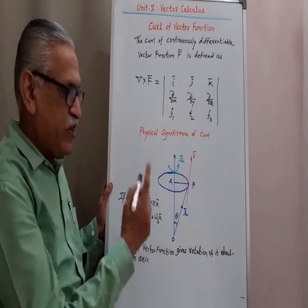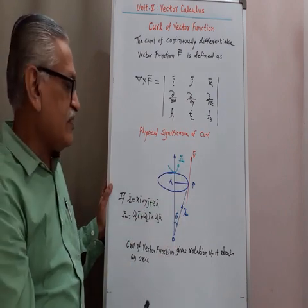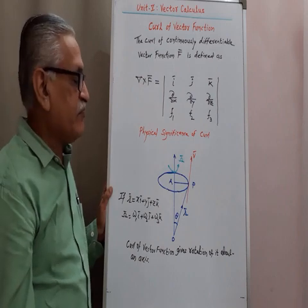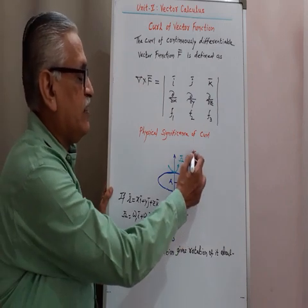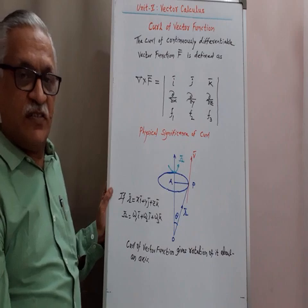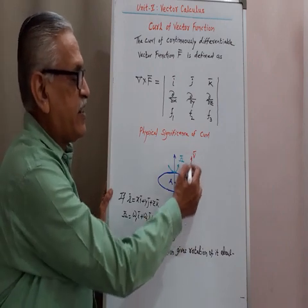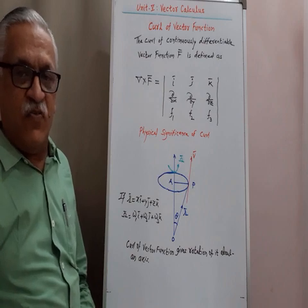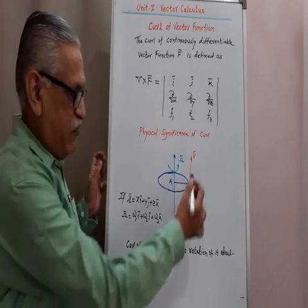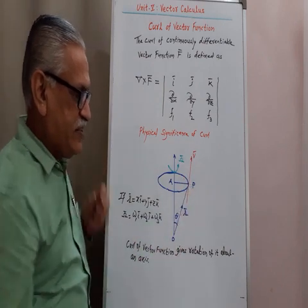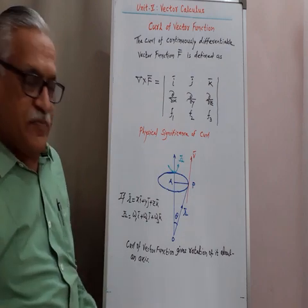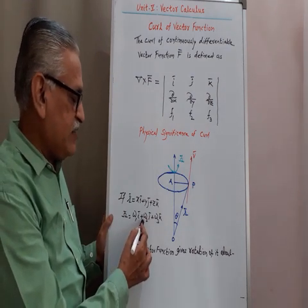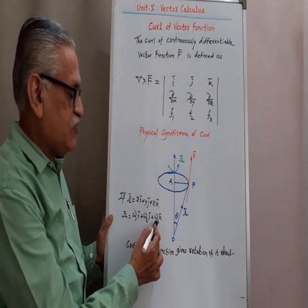There is an axis about which that body rotates. Theta is the angle between those two vectors. At point P, we draw a tangent to the curve, and along that tangent we have dr/dt, which is the velocity V-bar. Omega-bar is omega-1 times i plus omega-2 times j plus omega-3 times k.